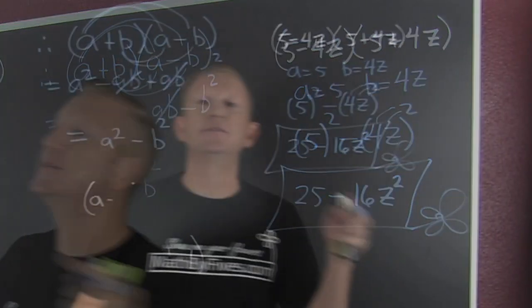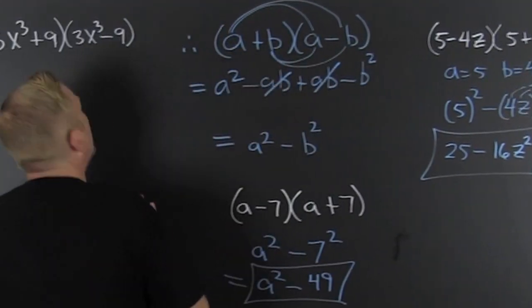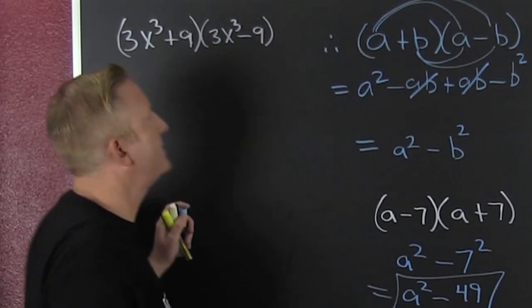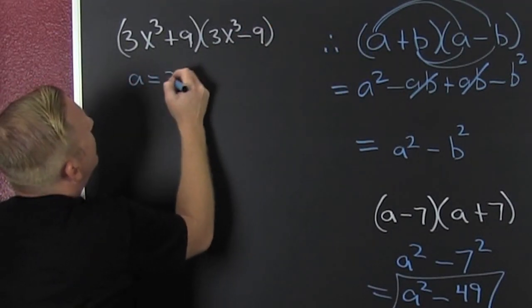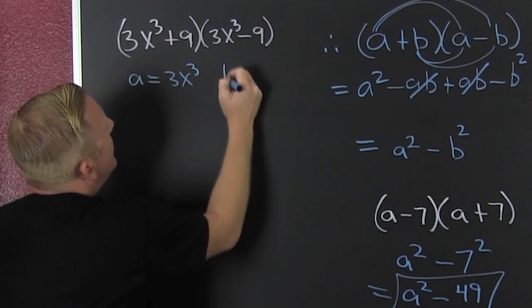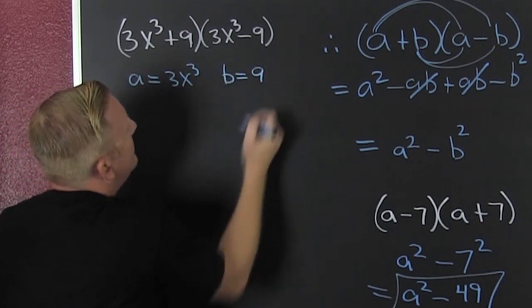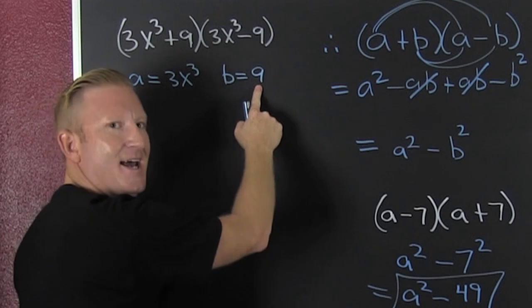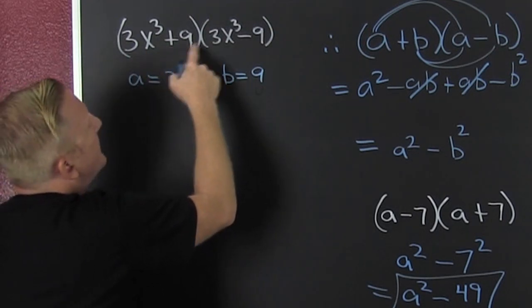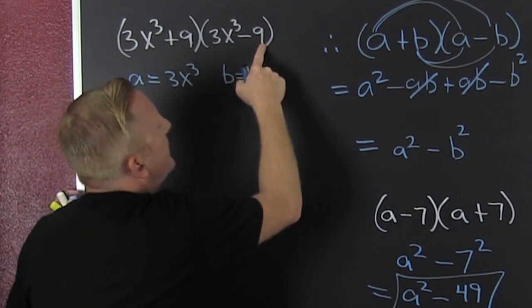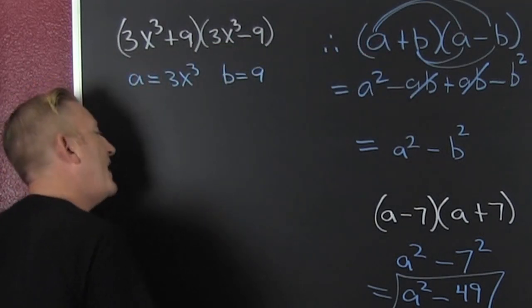So then what's over here? A more elaborate example, but we can still list our a and our b. We see that our a is gonna be three x to the third and our b is gonna be nine. So then I go and I see that it's a plus b, a minus b, so we have the difference of squares and we can go right there.